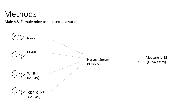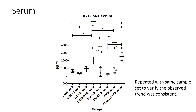In my methods, I had four groups: a naive group of mice, a CD4 knockout group that was not infected, a wild type infected group infected with the ME-49 strain of Toxoplasma gondii, and a CD4 knockout infected group also infected with the ME-49 strain. Five days post-infection, I harvested the serum and measured IL-12 using an ELISA assay. It is also important to note that I used both male and female mice to test sex as a variable.